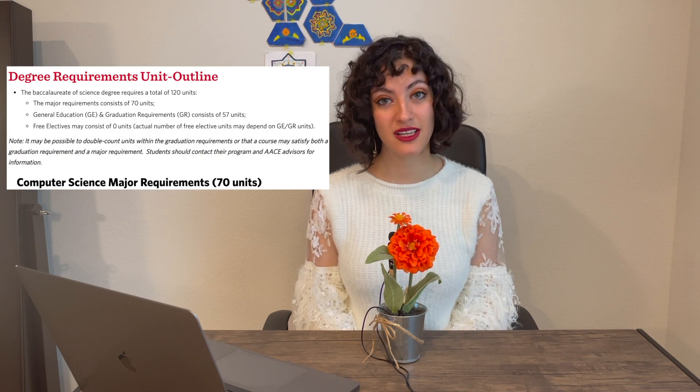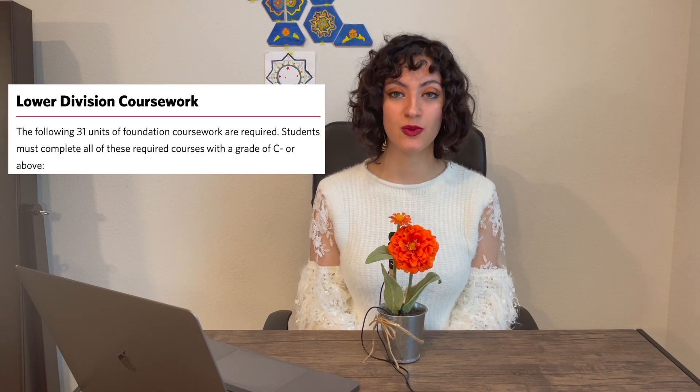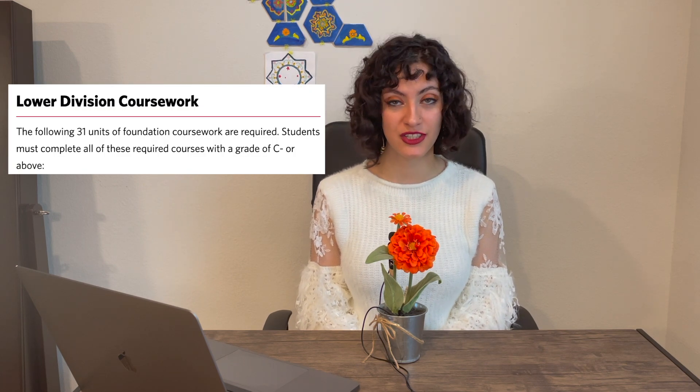For a bachelor's degree at East Bay, you need to complete 70 units of CS courses. Out of these, 31 units is what's called the lower division classes. Transfer students know these as the same classes as the major prep coursework — basically all the CS classes we had to take at our community college before we transfer to a four-year school.